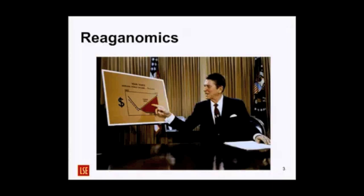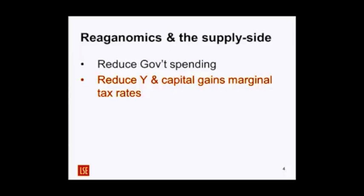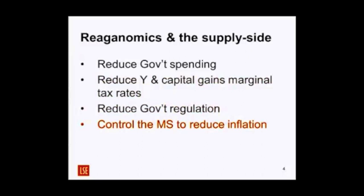Reaganomics — this is Reagan selling his 1981 project on primetime TV. Reaganomics and supply-side economics: reduced government spending, reduced income and capital gains marginal tax rates. This isn't just a British story — these kinds of 83% marginal tax rates, though very often in the literature we think it is. America also had very high marginal tax rates.